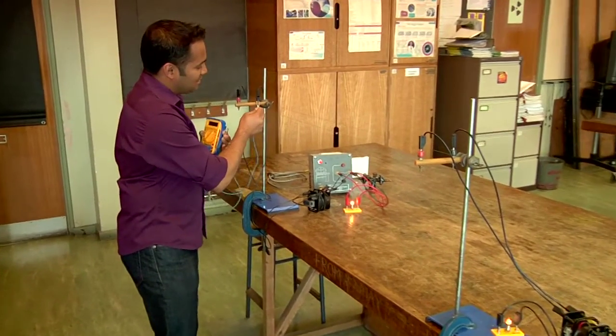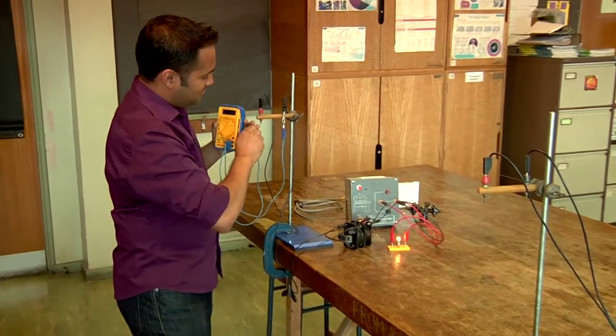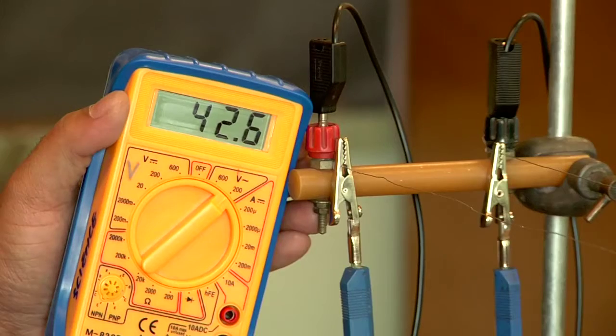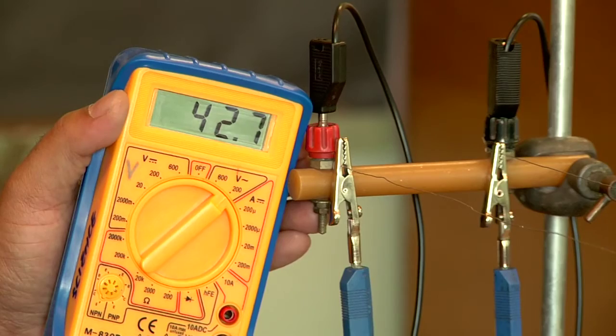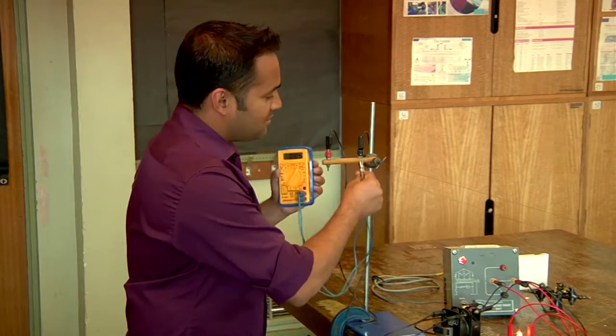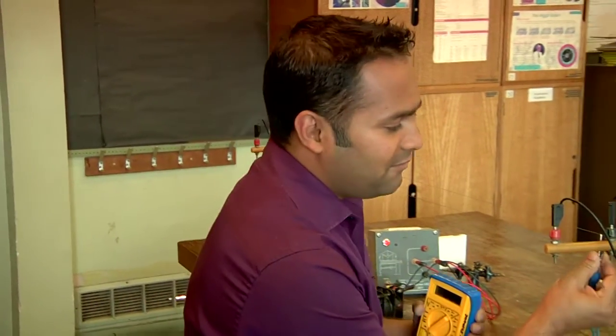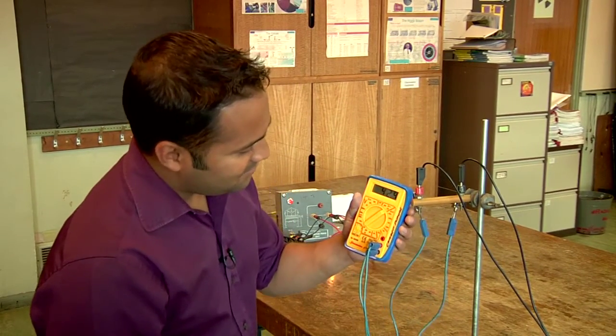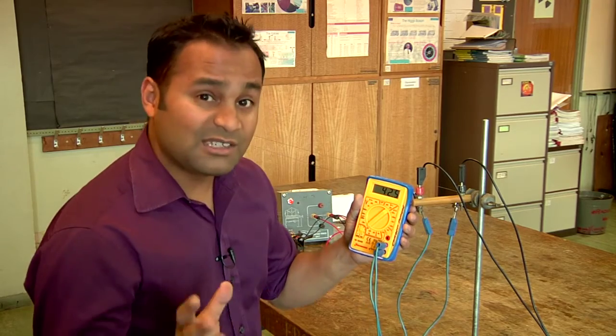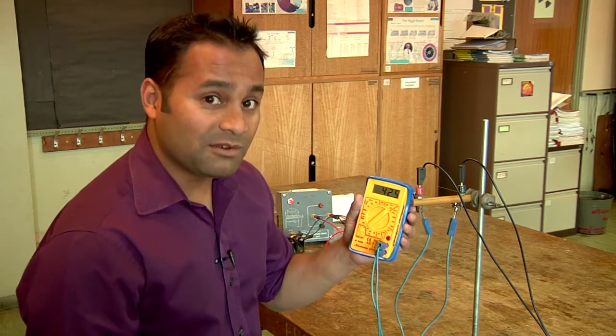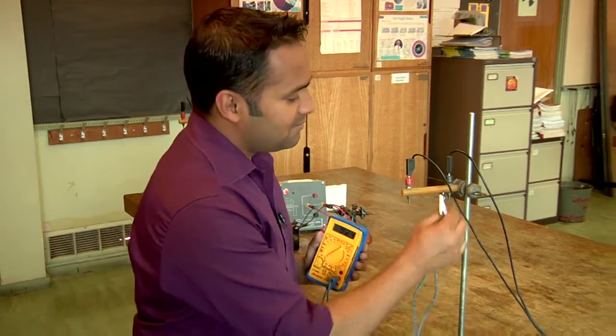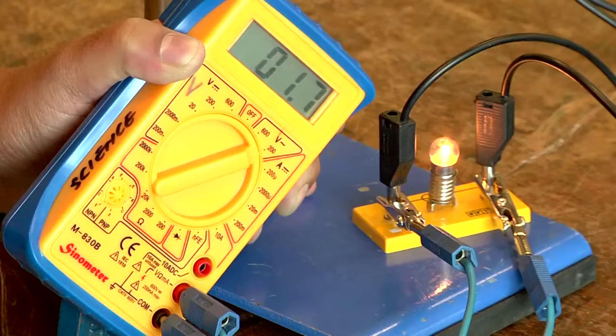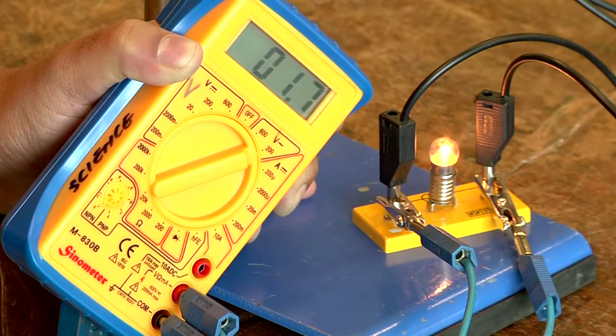At this end, closest to the power station, the potential difference between the wires is 42.6 volts. At the far end, it's only slightly less at 42.5, and down here I've got a voltage of 1.7 volts.